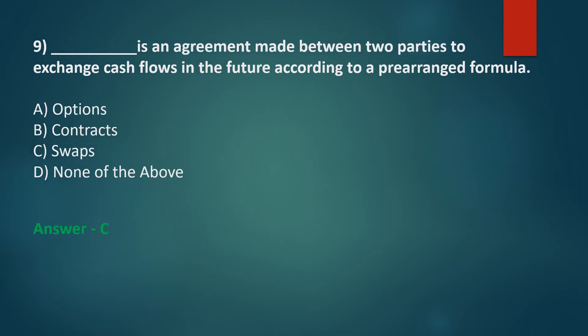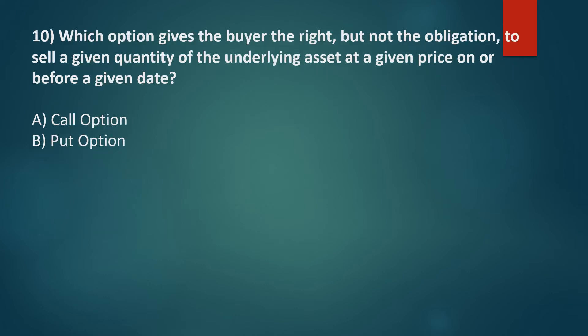Which of the following options gives the buyer the right but not the obligation to sell a given quantity of the underlying asset at a given price on or before a given date? Option A: Call Option, Option B: Put Option. The correct answer is Option B: Put Option.